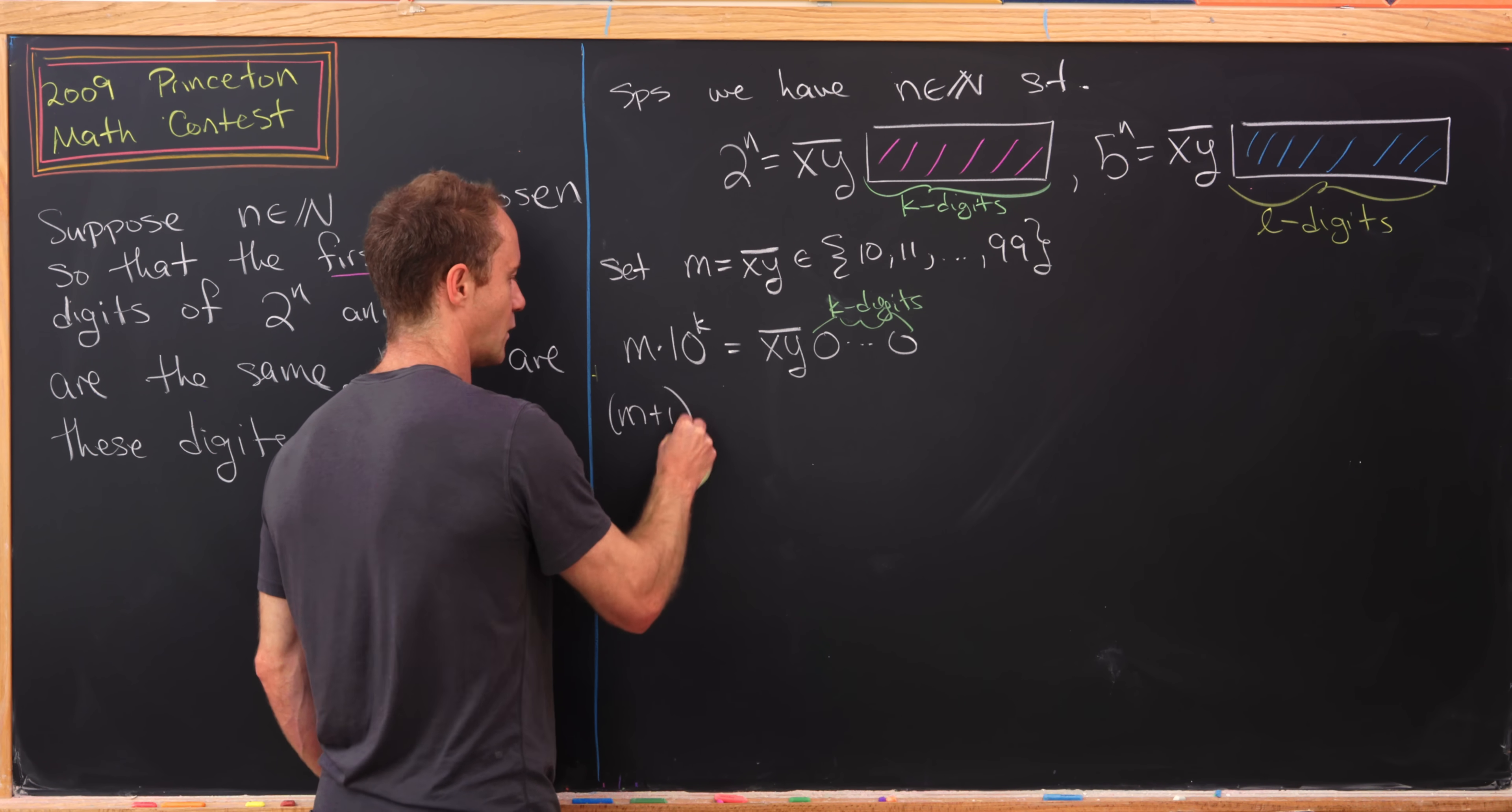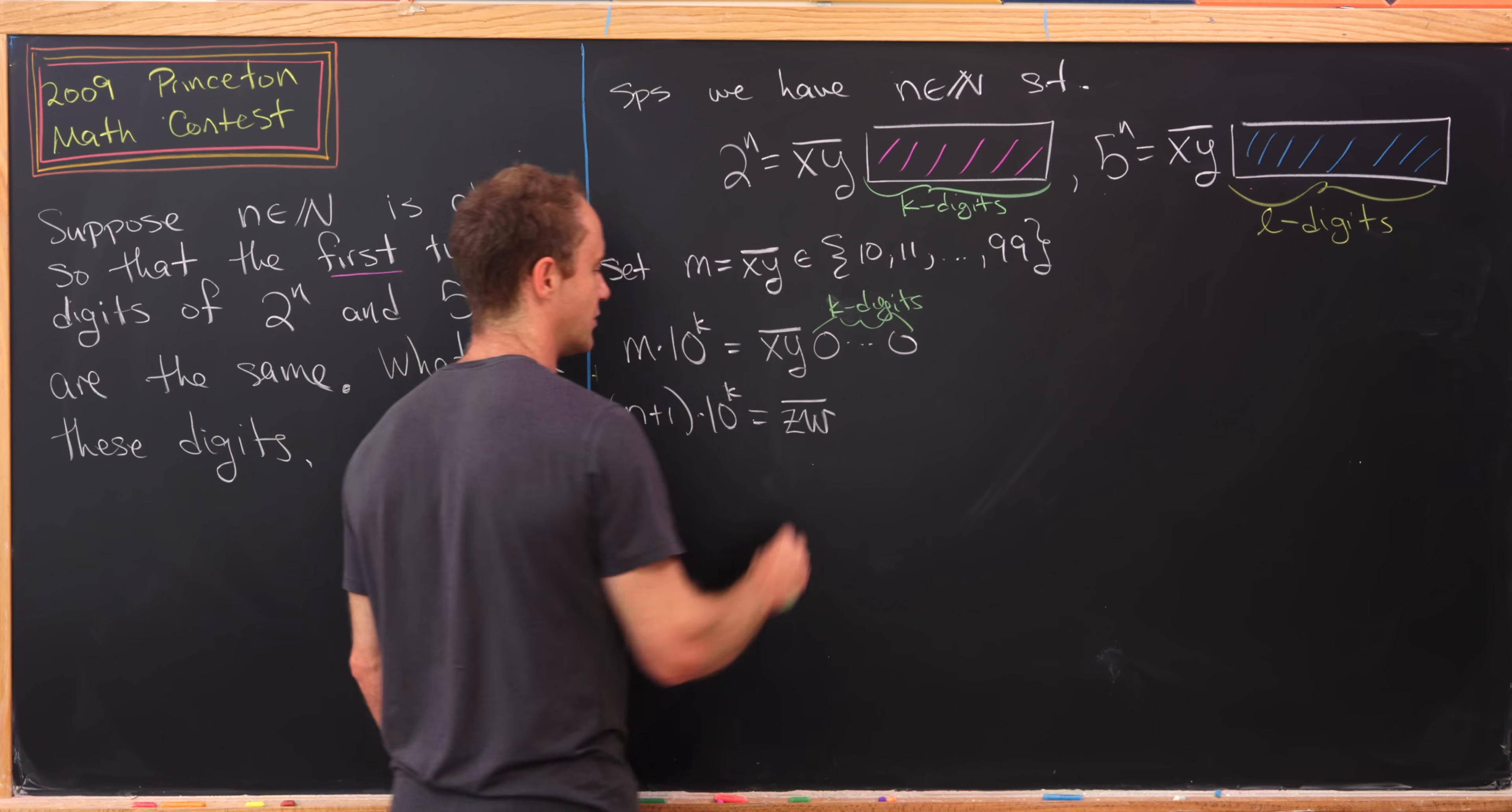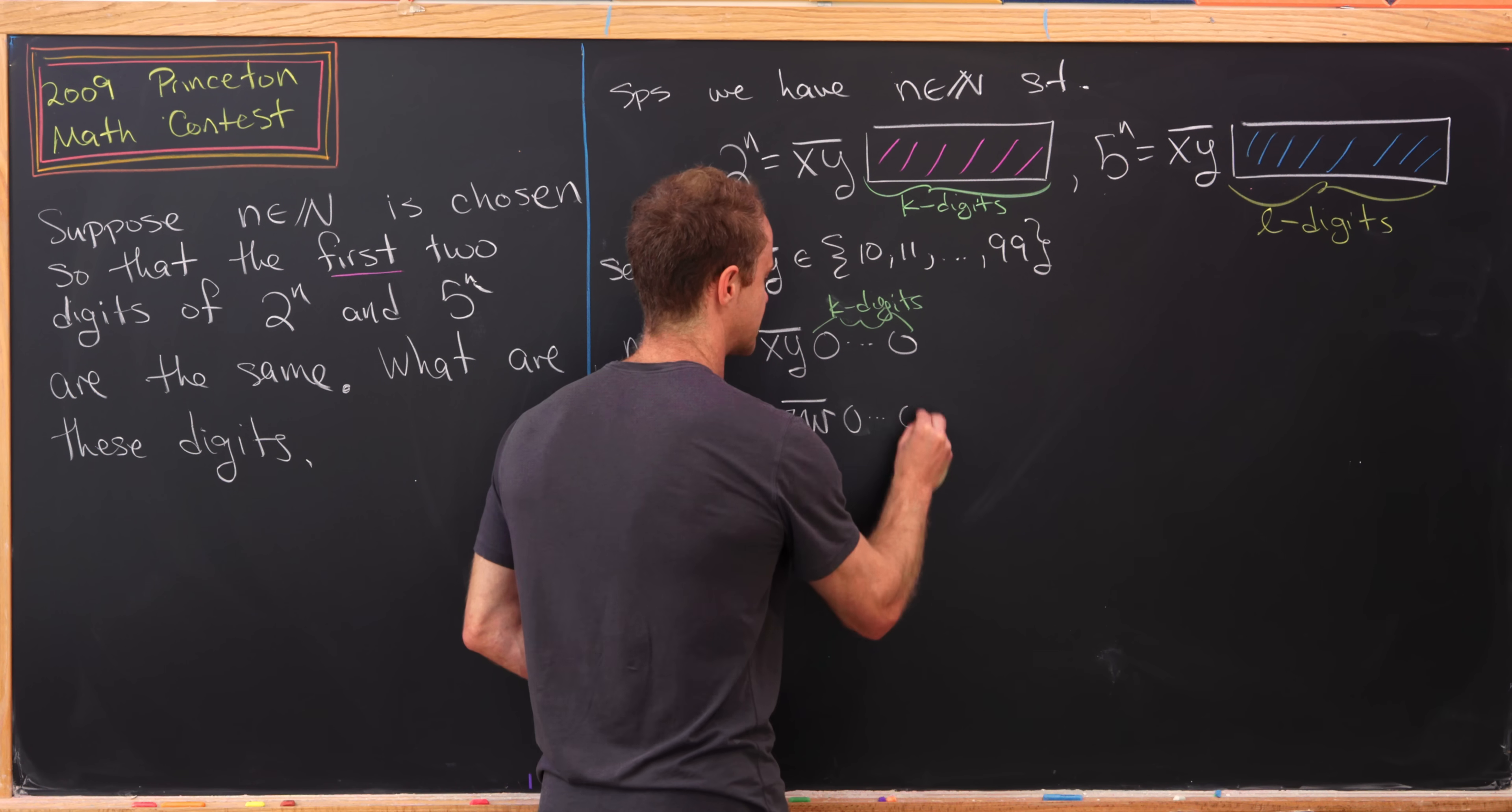Then let's look at the next one. (m+1) times 10^k will start with the two digit number zw, and that's because there might be carrying in the addition here. And then another k digits of zeros.